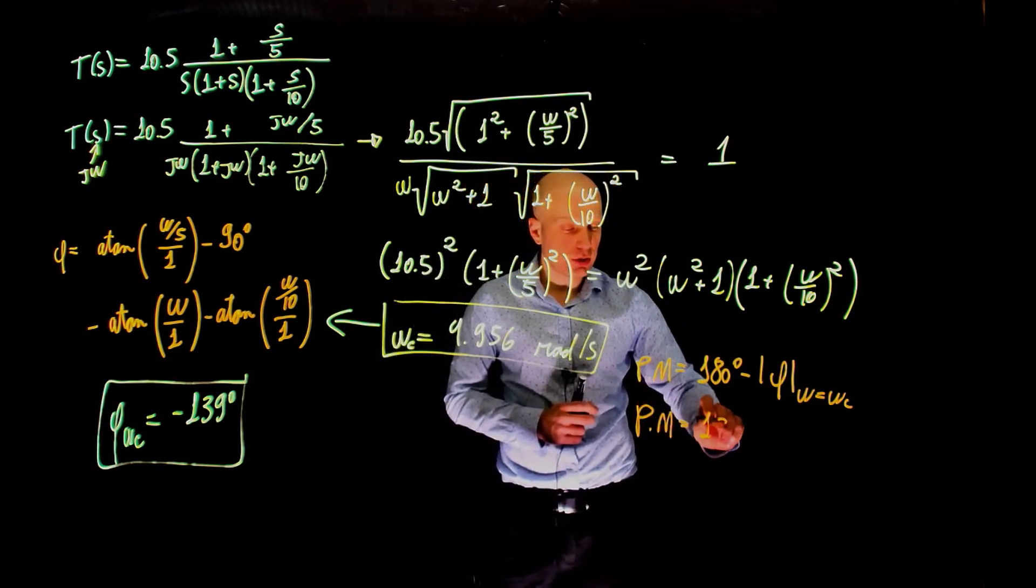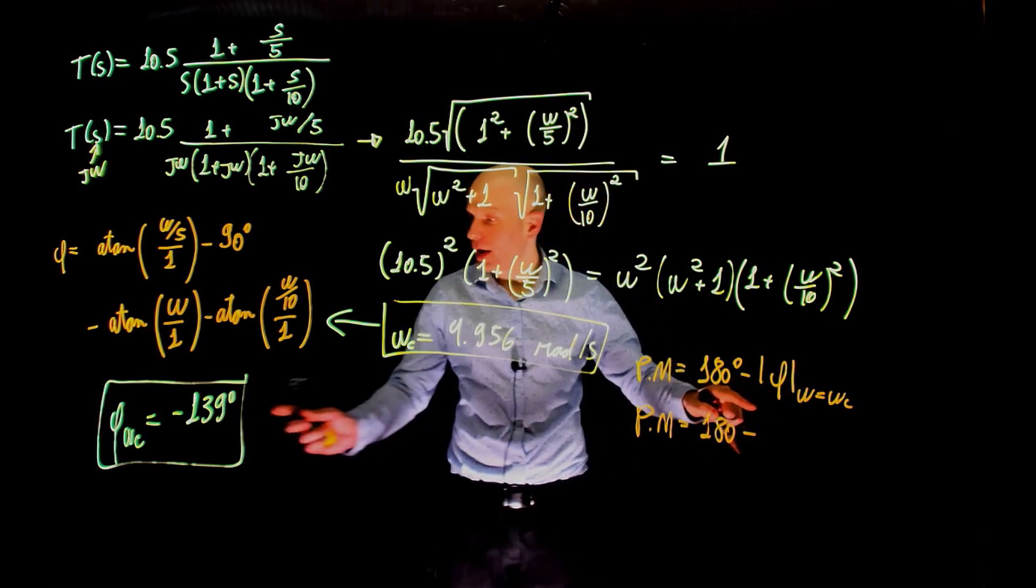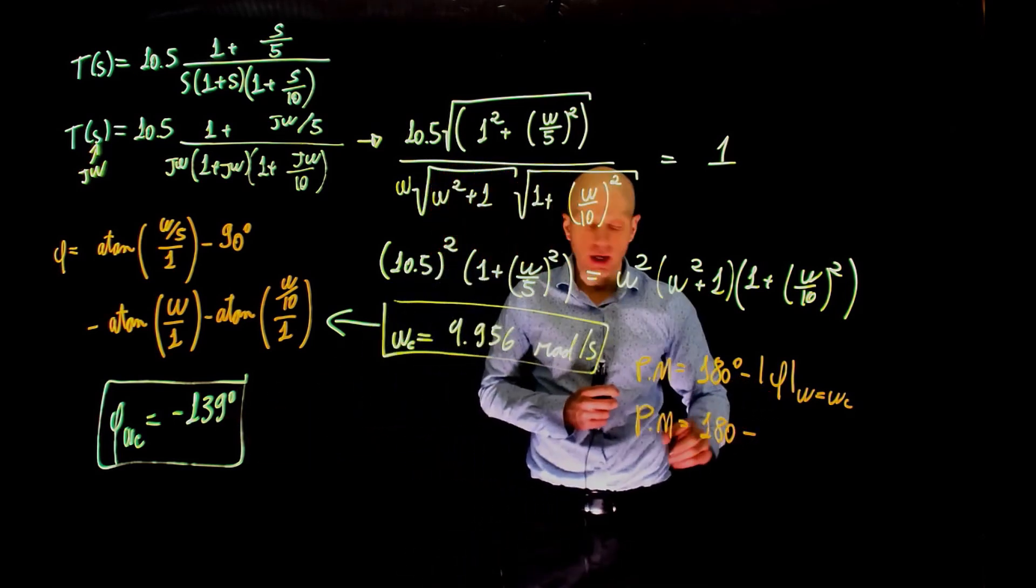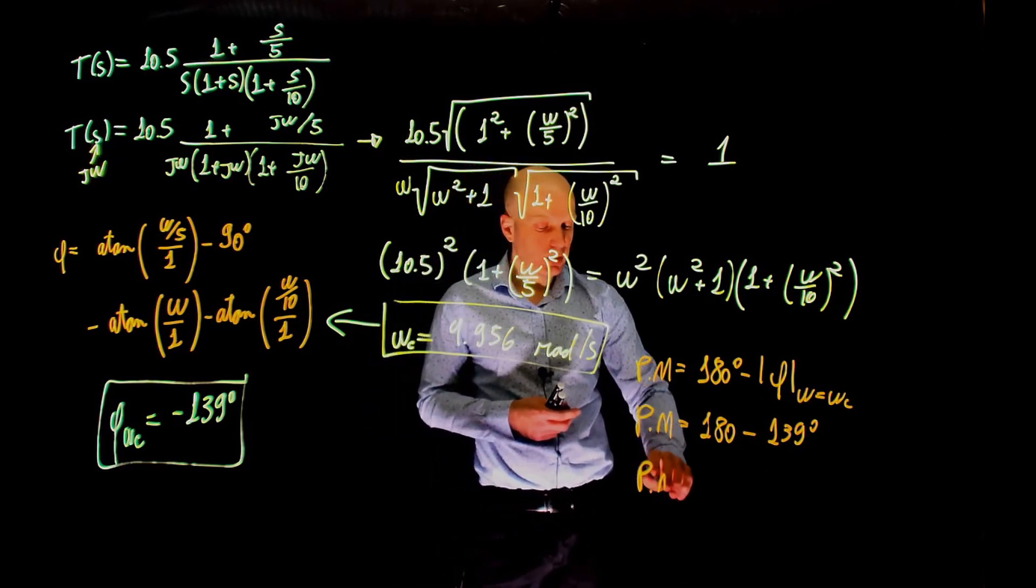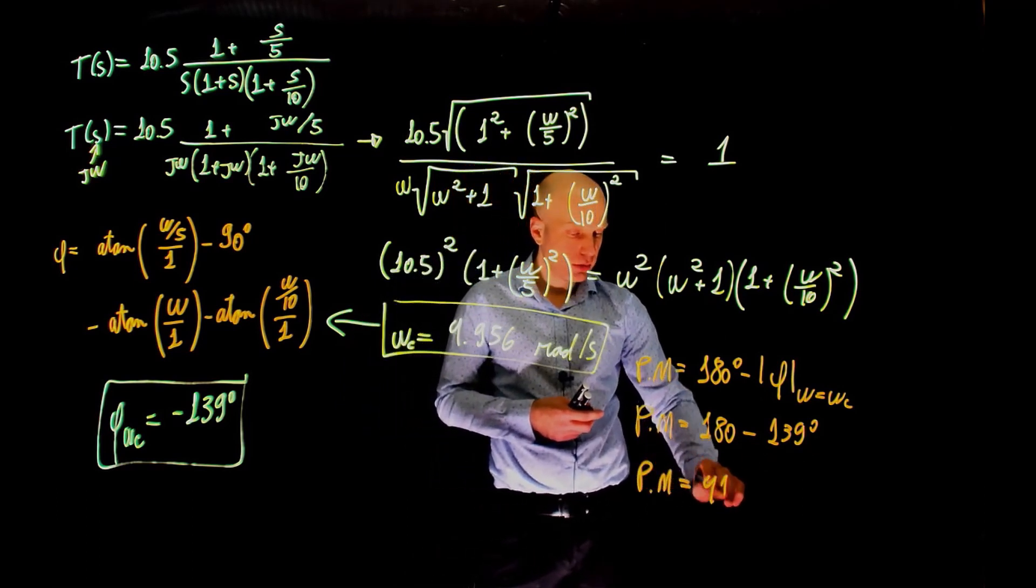This is 180 degrees minus the magnitude of negative 139, which is 139, and this gives the phase margin as 41 degrees.